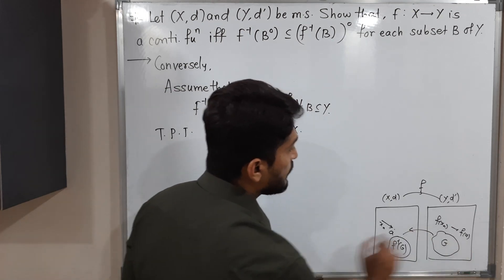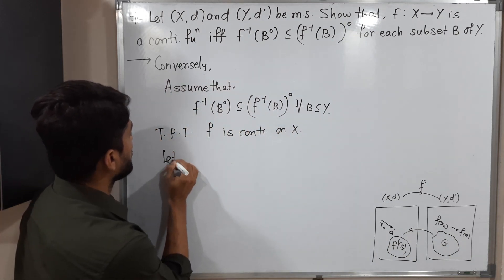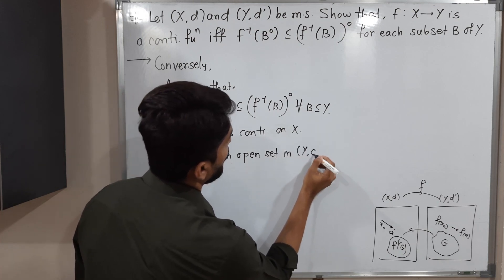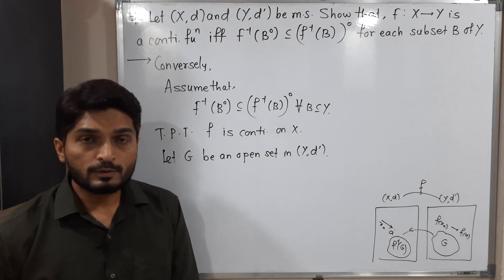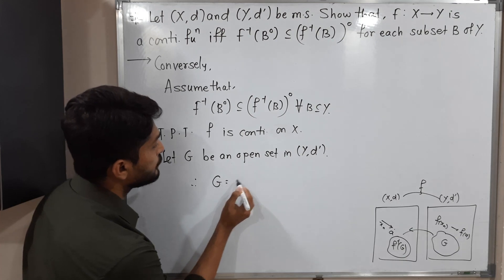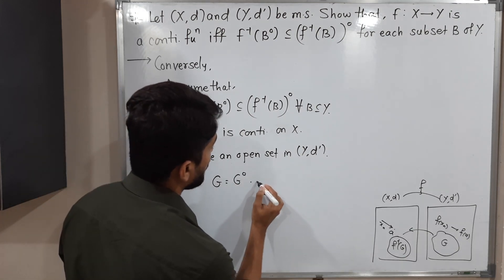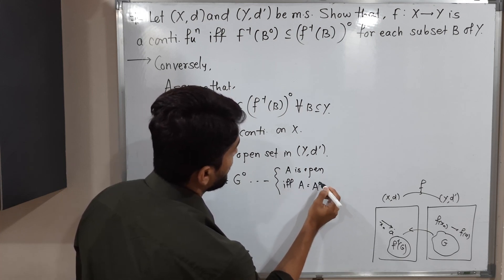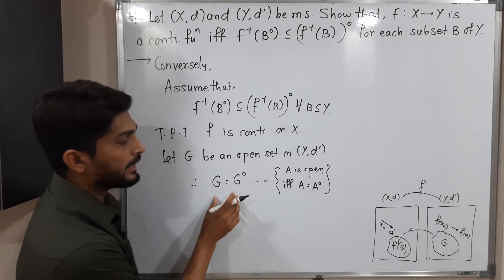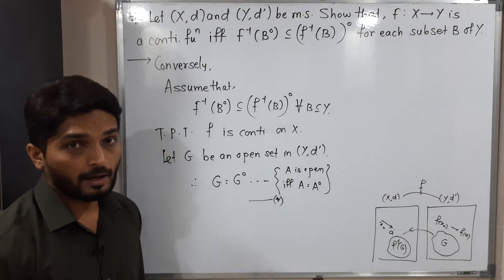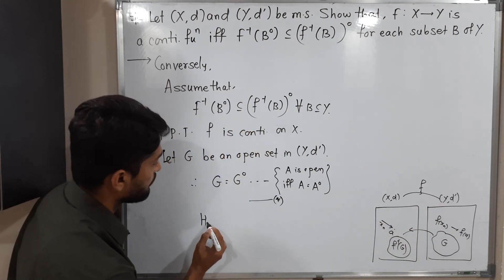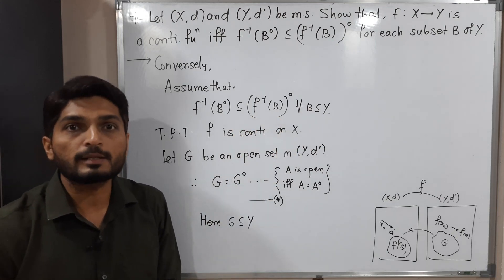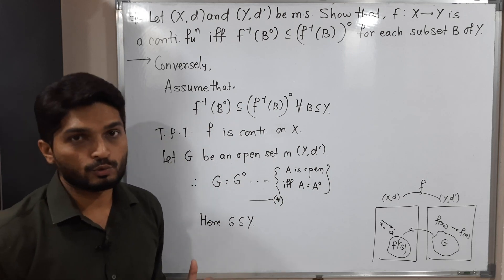Let G be an open set in (Y, d'). There is a result: a set A is open if and only if A = A° (A equals its interior). Since G is open, we can write G = G°. Let us call this (★). Now G is a subset of Y, and by our assumption the relation holds for each and every subset of Y, so G is also a valid choice for B. Therefore this relation is true for G as well.